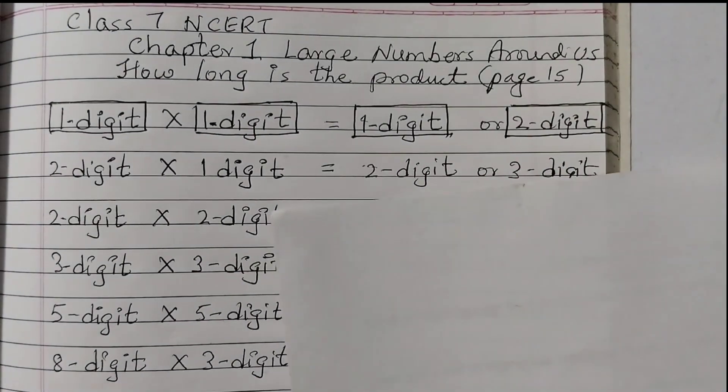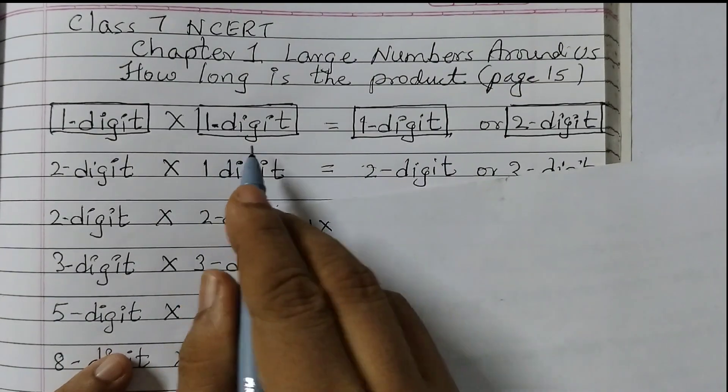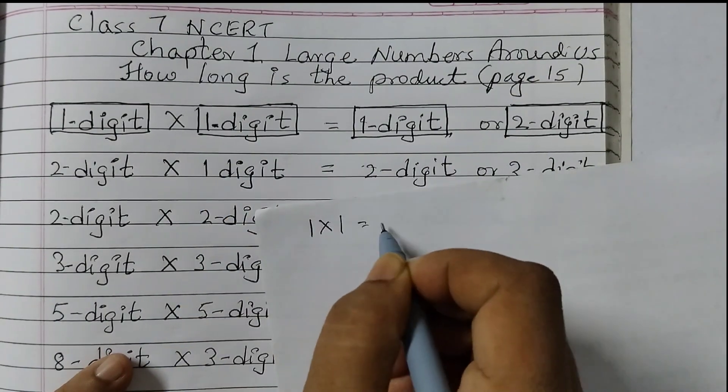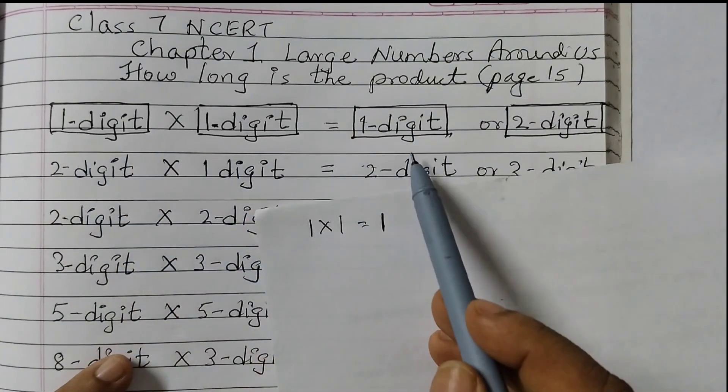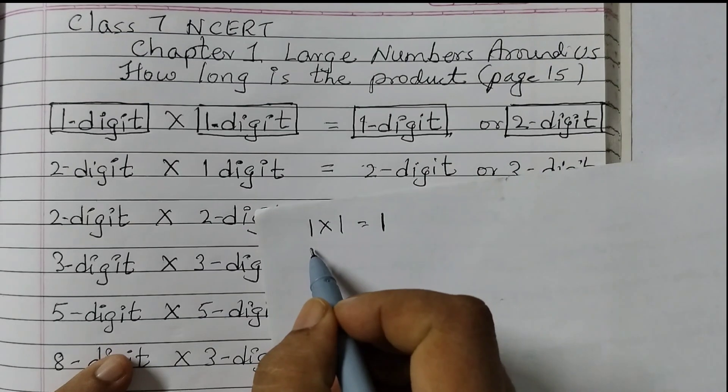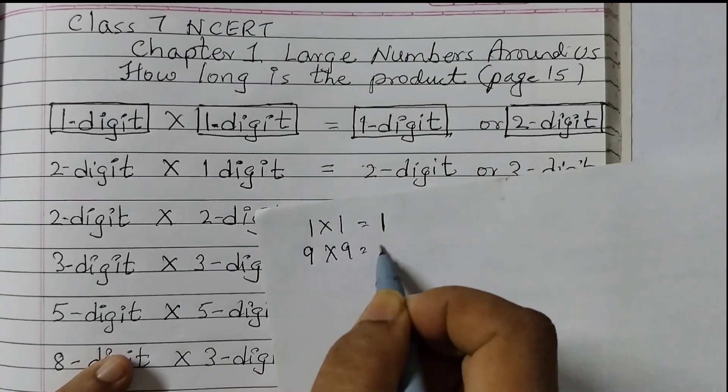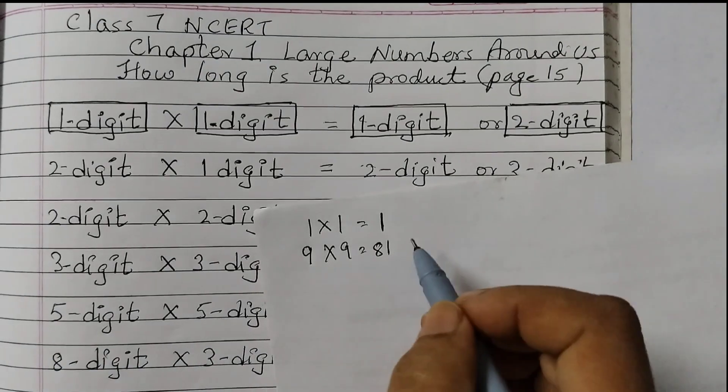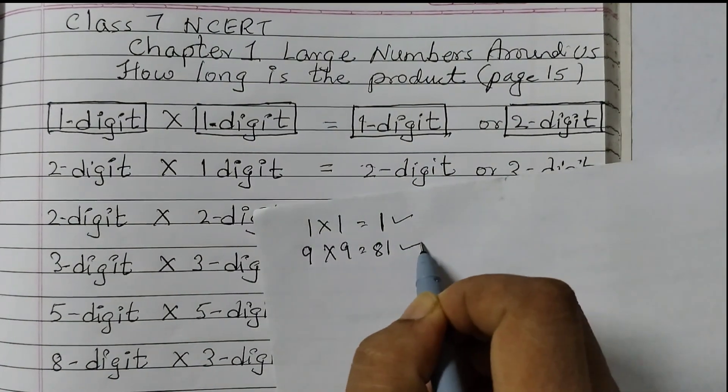Suppose I take the smallest 1 digit number, 1. 1 into 1 digit again 1 gives me 1. So when I multiply 1 digit and 1 digit, I get 1 digit or 2 digit. Suppose I take the largest 1 digit number which is 9. 9 into 9 is 81. So these are the 2 possibilities. Either I get a 1 digit number or a 2 digit number.